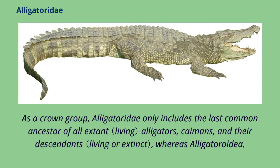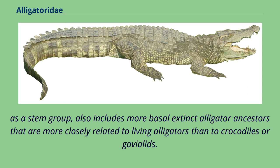As a crown group, Alligatoridae only includes the last common ancestor of all extant alligators, caimans, and their descendants, whereas Alligatoroidea, as a stem group, also includes more basal extinct alligator ancestors that are more closely related to living alligators than to crocodiles or gharials.